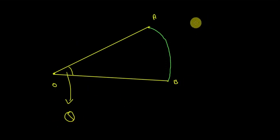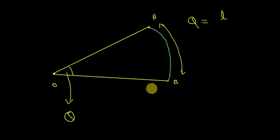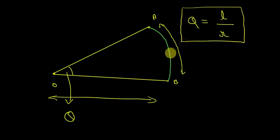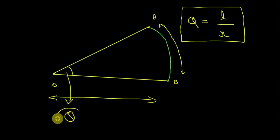Now if I ask you what is theta, most of you will say theta is the ratio of the length of this curve to the length R. This is the definition of theta — the angle. We say that theta is the angle subtended by this curve at point O.